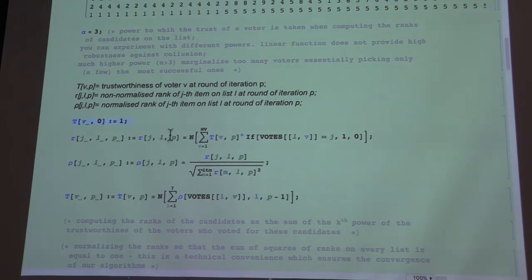Because as trustworthiness increases, the ranks will increase, which will in turn increase the trustworthiness and the thing can easily diverge. But if you keep this normalization, then things behave very well.